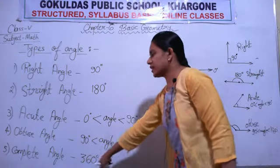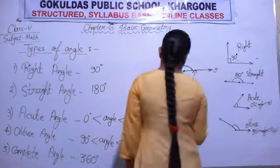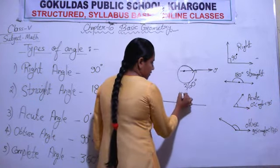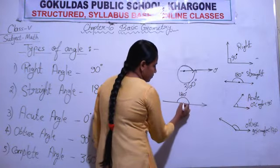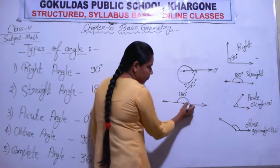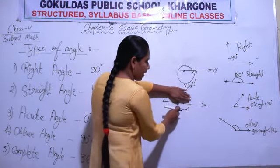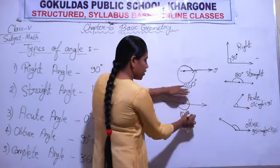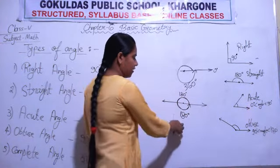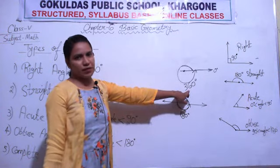That is why we call 360 degrees the complete angle — because one complete round is finished. So the complete angle measures 360 degrees.